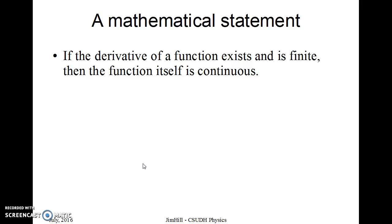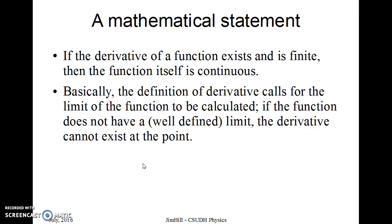If the derivative of a function exists and is finite, then the function itself should be continuous. Basically, that's true because the definition of derivative calls for the limit of the function to be calculated, and if the function doesn't have a well-defined limit, the derivative can't exist. So just that statement is not a proof, but it's true, and that's the underlying reason that it's true.